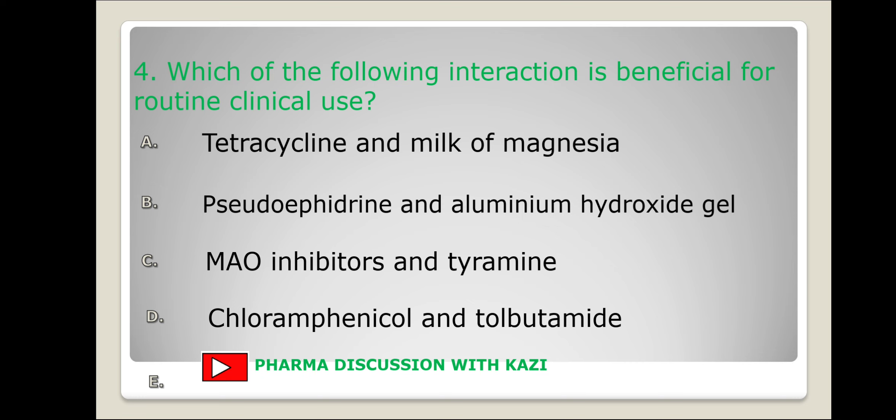In the first case, milk of magnesia forms complexes with tetracycline, which reduces the absorption of tetracycline. In the second case, pseudoephedrine is an amine drug, weakly basic in nature, and remains ionized in acidic pH.